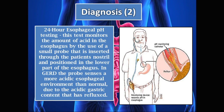The gold standard for diagnosing GERD is the 24-hour esophageal pH testing. This test monitors the amount of acid in the esophagus using a small probe inserted through the patient's nostril and positioned in the lower esophagus. In GERD, this probe senses a more acidic esophageal environment than normal due to the acidic gastric content being refluxed. On the schematic you can see the monitoring device recording the pH and the catheter with the probe inside the esophagus.